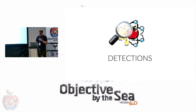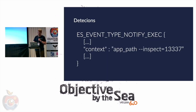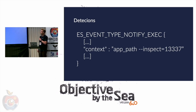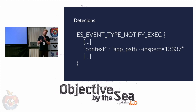Let's talk about detections. The situation is actually simple: there is the Endpoint Security Framework with an event called ES_EVENT_TYPE_NOTIFY_EXEC. In the parameter context you can see all parameters passed to applications. If you filter for the inspect flag, you'll notice that if some other process on your Mac spawns an Electron application with this flag, something suspicious is probably happening.